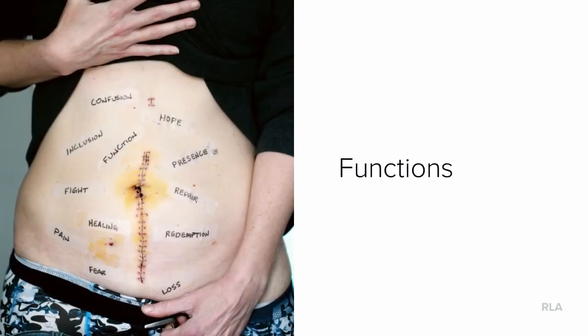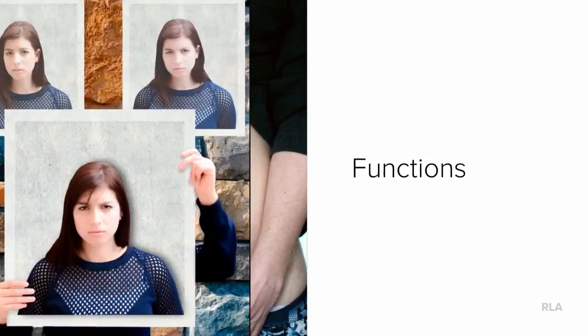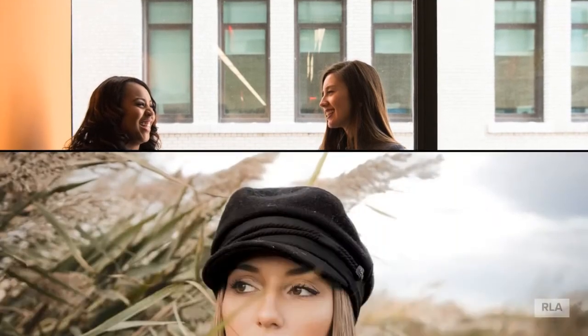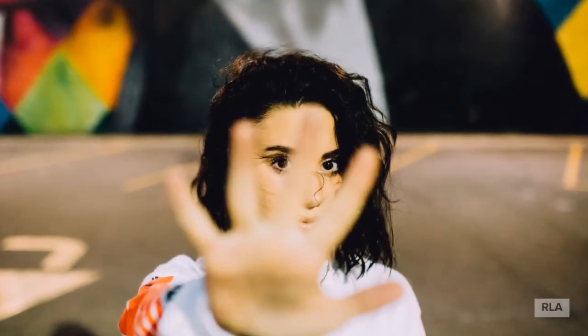Nonverbal communication serves many functions relative to helping us communicate. It functions along with verbal communication — it repeats it, accents it, complements it by adding meaning. Sometimes it can contradict it, sometimes it can be substituted in place of verbal communication, and sometimes it regulates and controls interactions, helping us manage conversations. For example, when we become disinterested we can look away, or put our hand up to ask someone to stop.